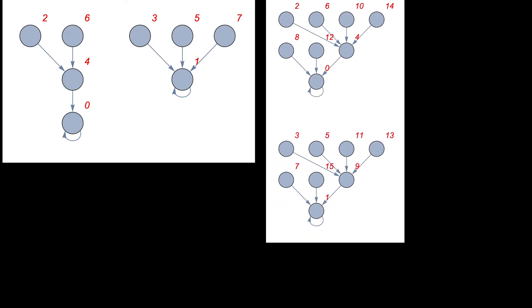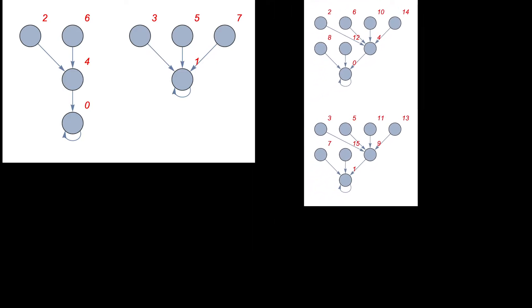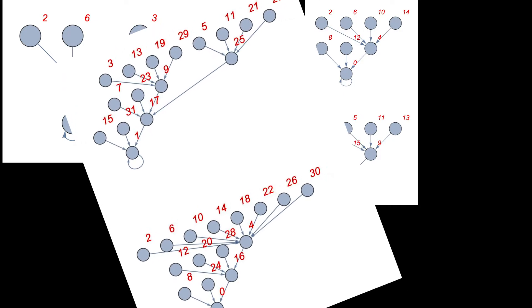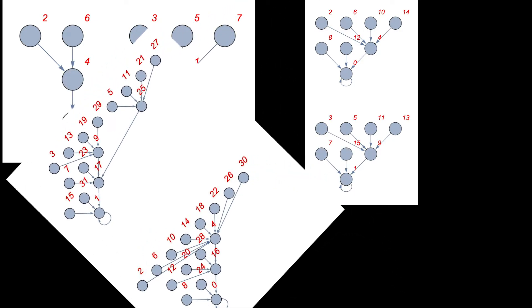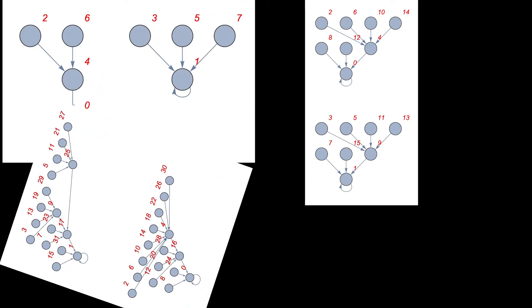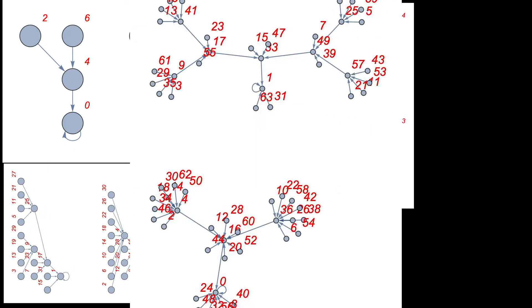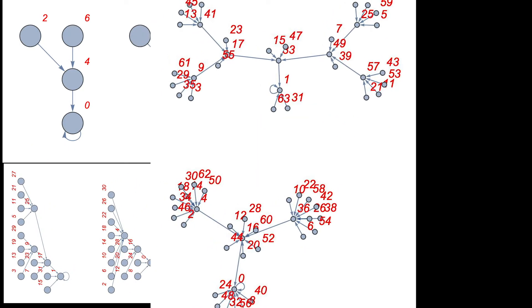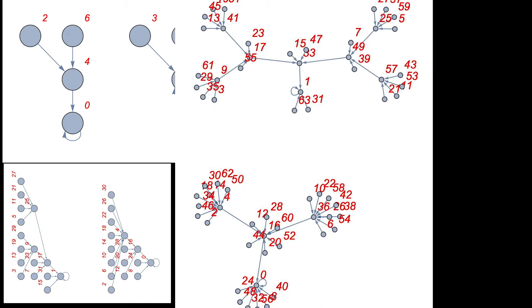What do we notice? First, the graph always has exactly two components. Second, each component is a directed tree. One tree has a root of 0, and the other has a root of 1. Notice that the 0 tree has all of the even numbers, and the 1 tree has all of the odd numbers.